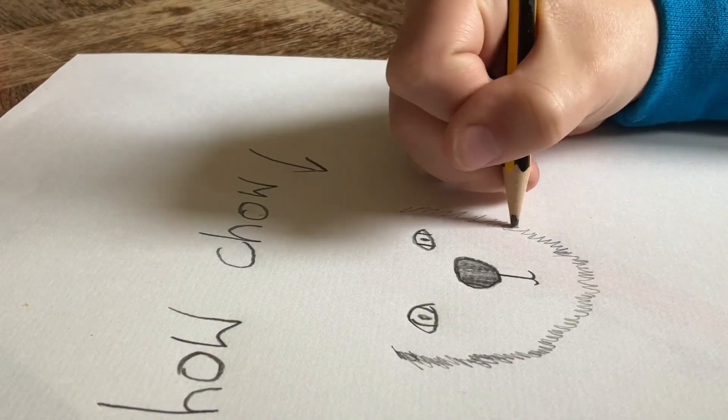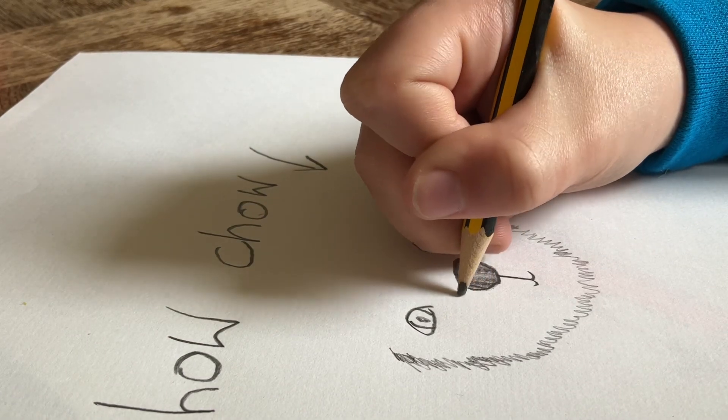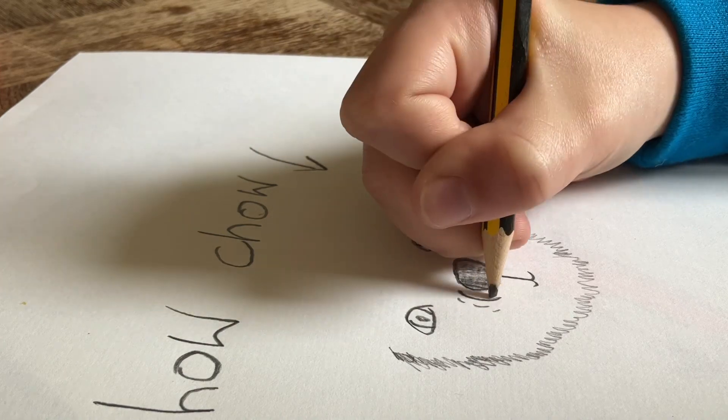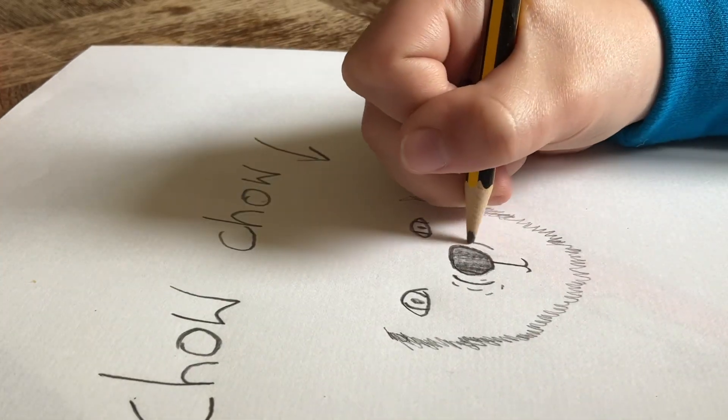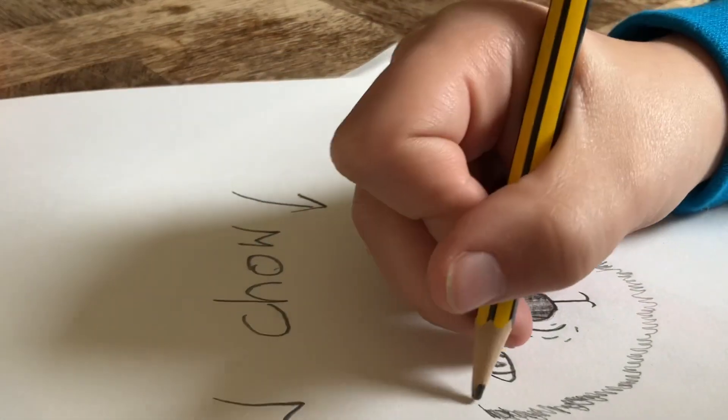Now we are going to just shade a little bit more. Then we are going to go to the nose and put some lines like these. Because if you saw the chow chow picture, then you would be able to see what it would look like. It has wrinkles on it.